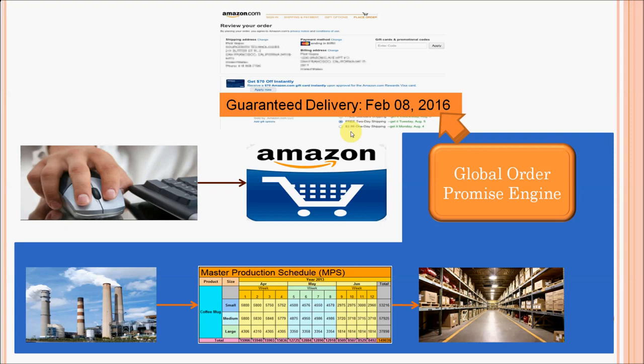That's where the Global Order Promising Engine comes into picture, where it looks at the sales order — which is the demand — as well as the supply, which can be available immediately as on-hand inventory at the warehouse, or it can look at any incoming future supply from a shop floor. By looking at the demand and the supply, and using the lead times from the warehouse to the customer's location, or the manufacturing lead time for work orders from the shop floor, it calculates the promised date and the scheduled shipment date, which is the guaranteed delivery date.